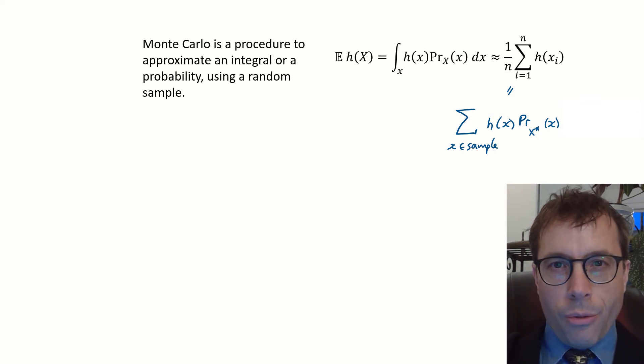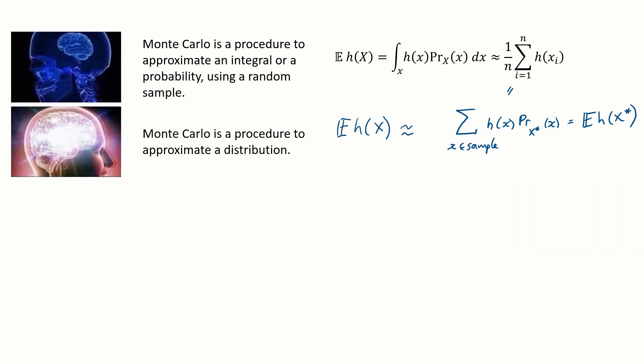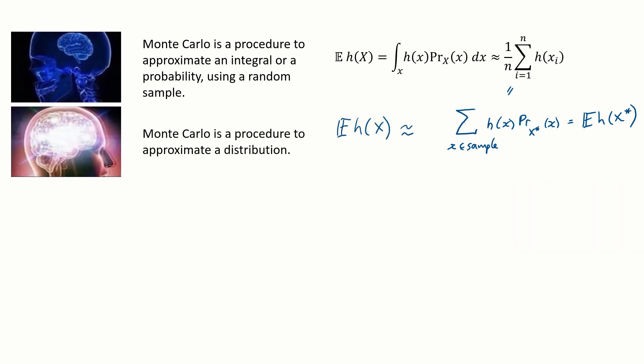But this formula is just another way of writing an expectation for a discrete random variable. It's the expected value of h of x star. So what we're really saying is that we can approximate the random variable x by the empirical distribution x star.